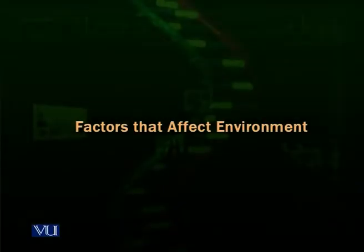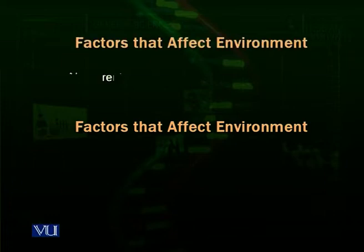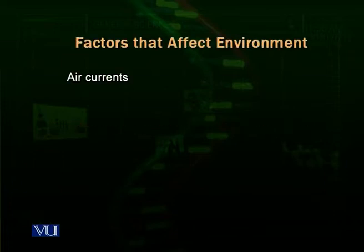Now we talk about various factors that can affect an environment. There are different types of physical factors that affect an environment, like air. The air currents can change or modify the temperature of an environment. Air in the form of wind, if it is a very strong wind, it can disturb the trees and the soil. It can move the soil from its place to another part, particularly the sand in deserts, which is moved from one part to another by the wind.